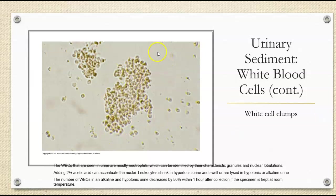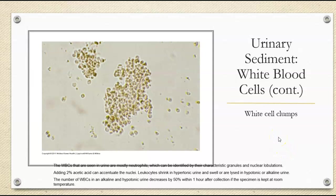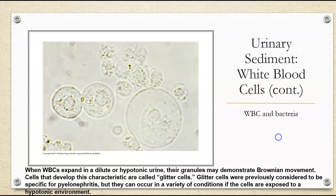This is an example of a white cell clump — we can usually see the granules and the lobes of the nucleus. We can add acetic acid to accentuate the nuclei. Leukocytes will shrink in hypertonic urine or swell in hypotonic or alkaline urine. The number of white cells in alkaline and hypotonic urine will decrease by 50% within one hour of collection if the specimen is kept at room temperature. So we want to make sure that we're looking at these sediments within an hour of collection.